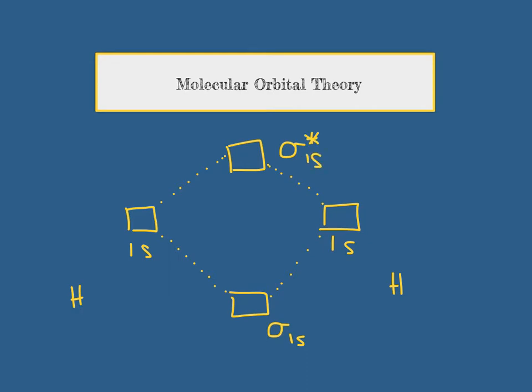To fill in the, basically an Aufbau diagram, but for molecules, all you need to do is figure out how many valence electrons each atom is donating to this bonding. Hydrogen has one from each, so I will draw one, two arrows. I fill in the molecular orbitals exactly the way I would fill in an Aufbau diagram, by putting my arrows in the lowest orbital first, and then pairing them up after I make sure that each orbital only has one upspin electron.